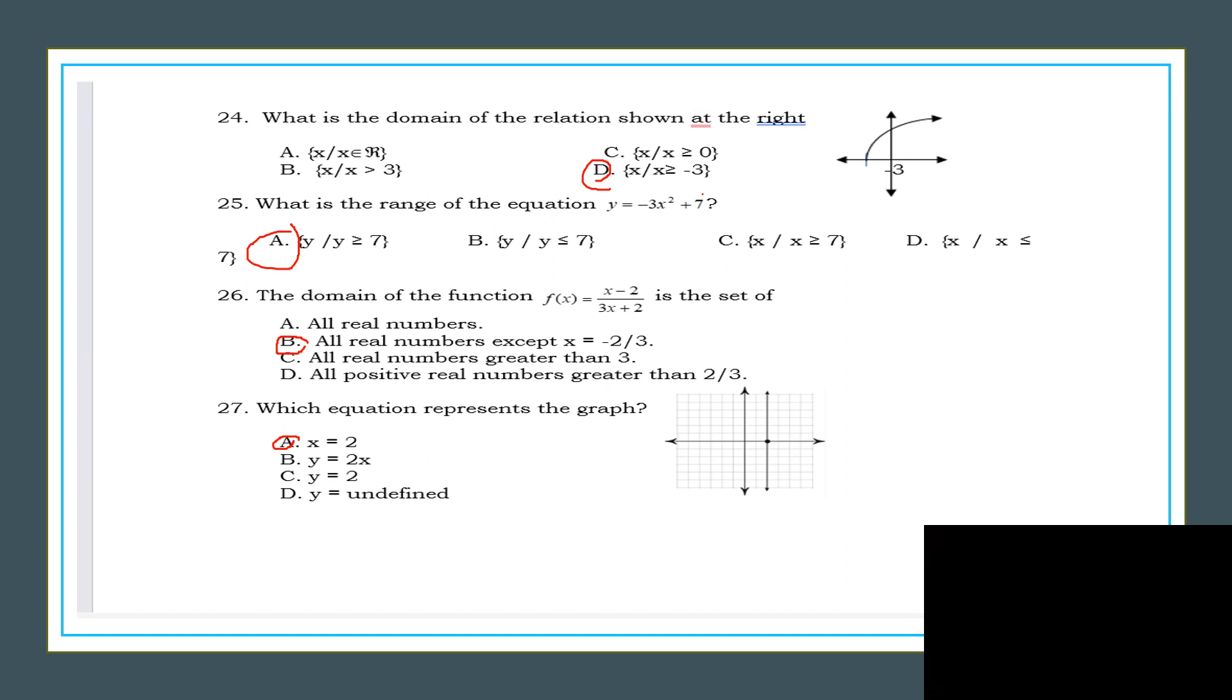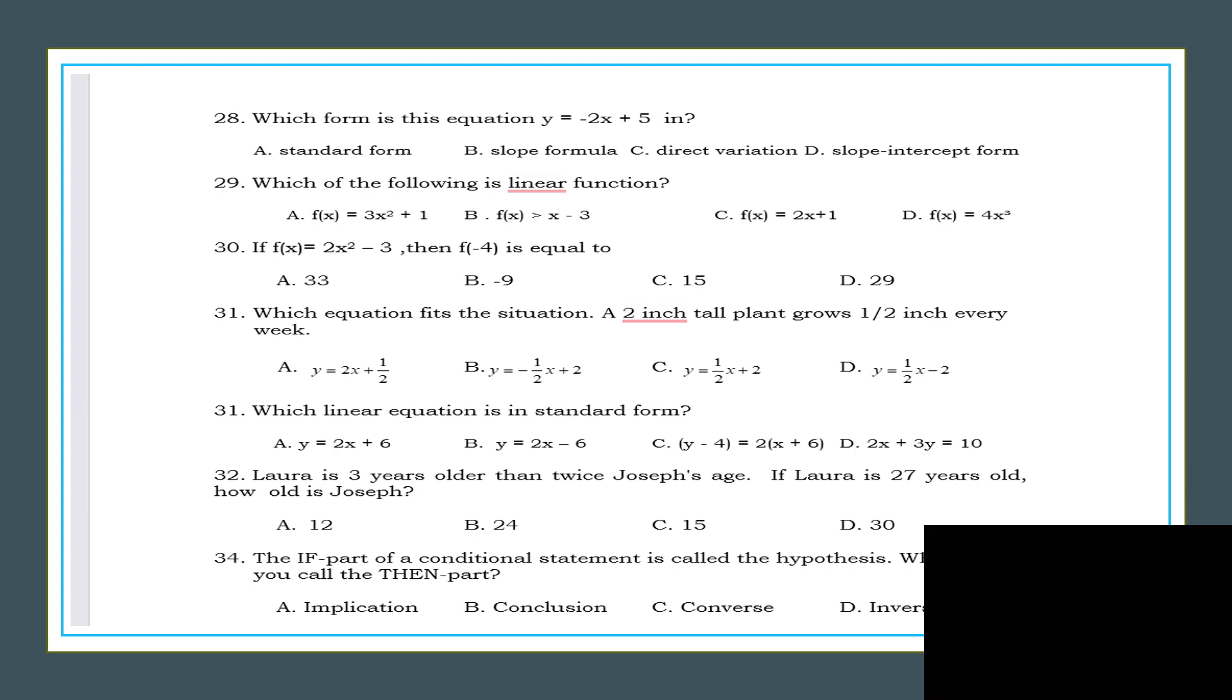Next, number 28. Which form is the equation y equals negative 2x plus 5 in? Okay, so this is an example of a slope intercept form. Which of the following is a linear function? Okay, what do you think the answer is? C, f of x equals 2x plus 1, it's a linear function.